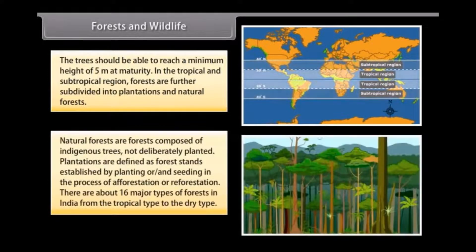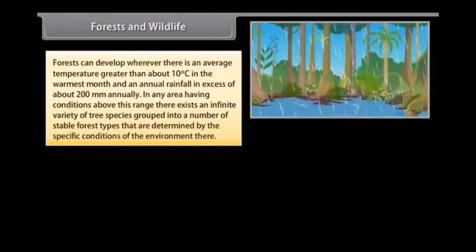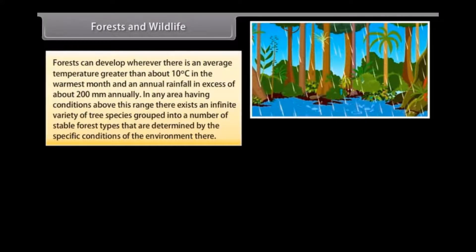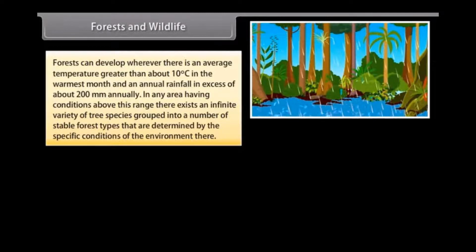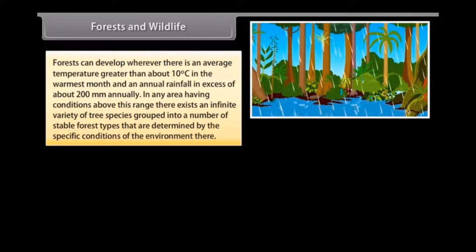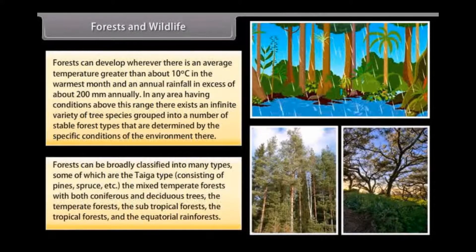Natural forests are forests composed of indigenous trees not deliberately planted. Plantations are defined as forest stands established by planting or seeding in the process of afforestation or reforestation. There are about 16 major types of forests in India from the tropical type to the dry type. Forests can develop wherever there is an average temperature greater than about 10 degrees Celsius in the warmest month and an annual rainfall in excess of about 200 mm. In any area meeting these conditions, there exists an infinite variety of tree species grouped into stable forest types.